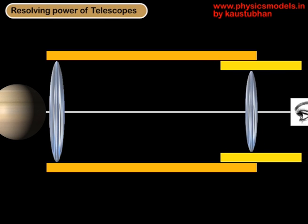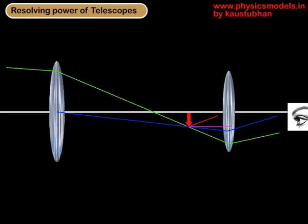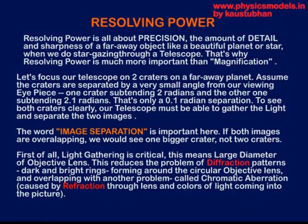Let's take two craters around the center line of the planet and one slightly above. The lower crater on that planet will subtend a certain angle at the eyepoint placed on the principal axis, and the upper crater will subtend a slightly higher angle. Let's say the lower crater subtends 2 radians and the upper one 2.1 radians. We want to see two separate images of the two craters — only then we would know that there are two craters. Therefore, the telescope should have the ability to do image separation, although from our point of view those two craters are only 0.1 radians separated from an angular point of view.